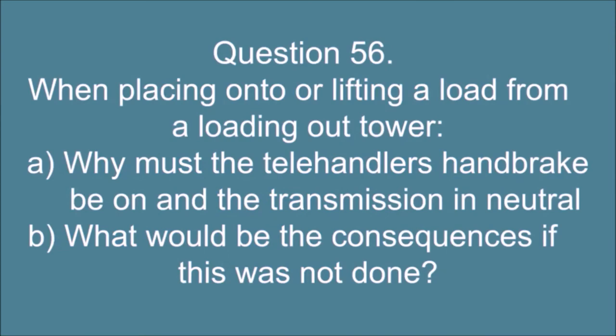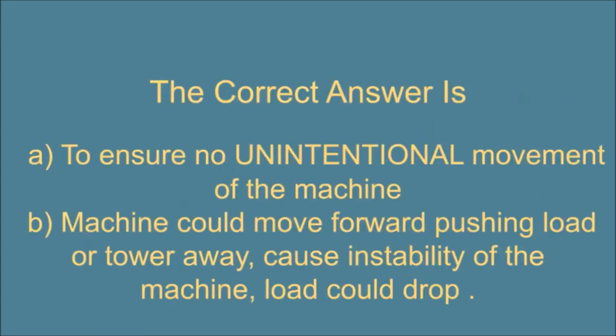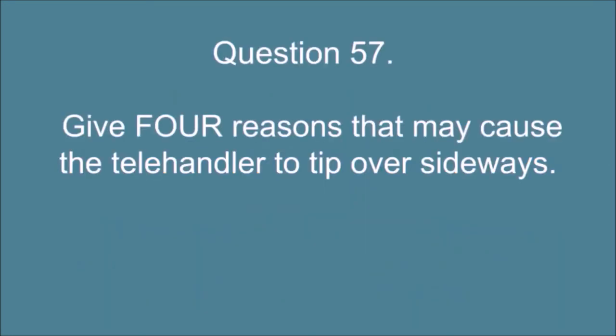Question 56. When placing onto or lifting a load from a loading out tower, A. Why must the telehandler's handbrake be on and the transmission in neutral? And B. What would be the consequences if this was not done? The correct answer is: A. To ensure no unintentional movement of the machine. And B. Machine could move forward pushing load or tower away, cause instability of the machine, load could drop.